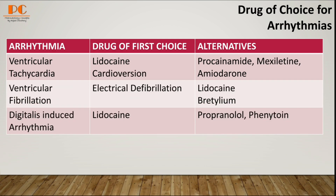For ventricular tachycardia, we can select lidocaine and cardioversion as the first choice. And procainamide, mexiletine, and amiodarone as alternatives.